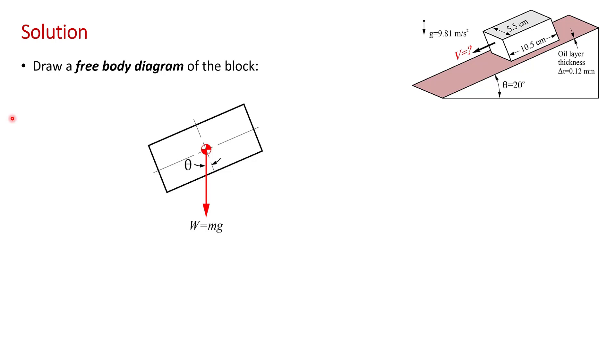So you want to draw the block completely isolated in space. Don't draw the inclined plane. So the block only, and you put all the forces on it. Here I've shown the weight of the block acting vertically, mg, and I've indicated the slope of the plane, theta.